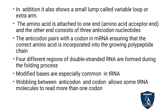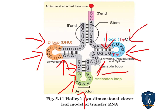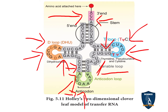The position where the amino acid attaches is called the amino acid acceptor arm. Opposite to it is the anticodon loop, which contains three bases — G, A, A — as the anticodon. The amino acid attaches only at the amino acid acceptor arm. The anticodon carries the mRNA coding to produce the polypeptide chain, and bonding between peptides increases the polypeptide chain.